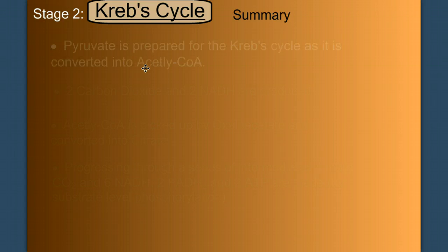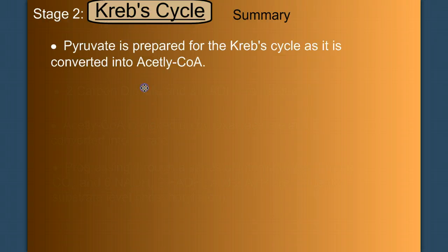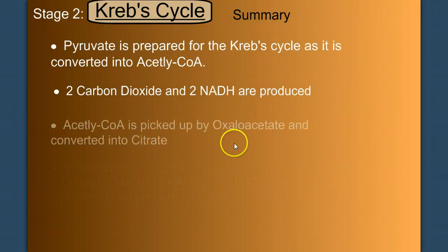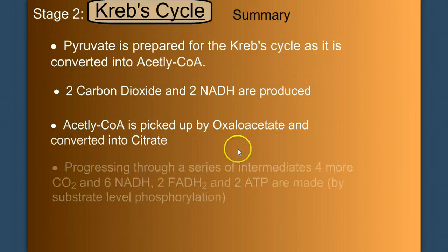So, the Krebs cycle. Pyruvate is prepared for the Krebs cycle as it's converted to acetyl-CoA. Two carbon dioxide and two NADH are produced in this prep step. The acetyl-CoA is picked up by oxaloacetate and converted to citrate. And then, progressing through a series of intermediates, four more carbon dioxides, six NADH, and two FADH2s, and two ATP are made, ATP made by substrate-level phosphorylation.